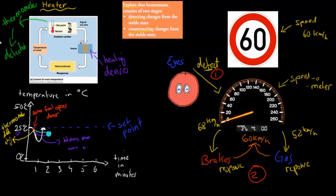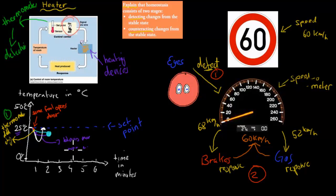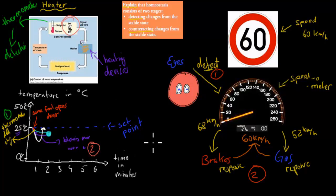So we have detection — which was the thermometer — as step one for detection. And the response was that the heater switched on to blow hot air and bring the temperature back up to its normal, ideal level. That was just a different analogy for homeostasis, and how detection and response helps us to achieve homeostasis.